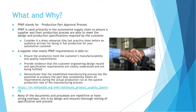What is the PPAP, and why is it important? PPAP stands for Production Part Approval Process. It's used primarily in the automotive supply chain to ensure that a supplier and their production processes are able to meet the design and production specifications for the product required by the customer. Consider it a dress rehearsal for being in full production for your automotive customer — it's the way to show your customer that you can make the parts they need to meet their requirements. A supplier that meets their PPAP requirements is able to ensure the products meet the customer's manufacturability and quality requirements, provide evidence that the customer engineering design record and specification requirements are clearly understood and are being fulfilled, and demonstrate that the established manufacturing process has the potential to produce parts that consistently meet all requirements during the actual production run at the quoted production rate.